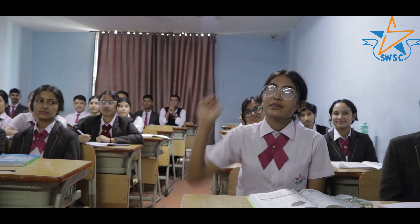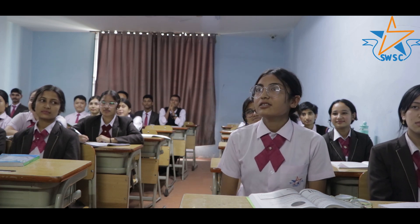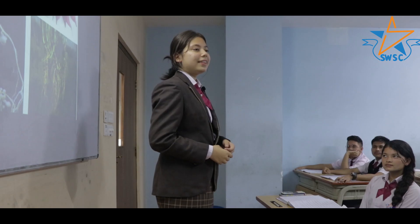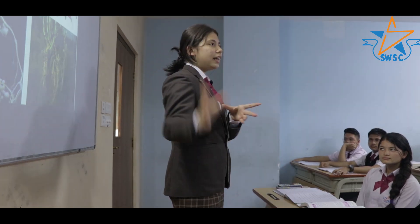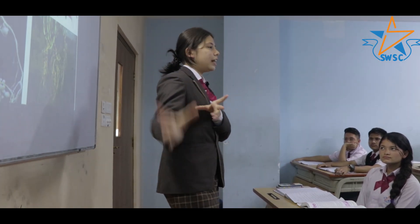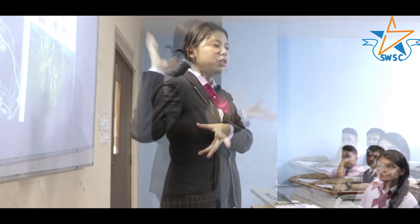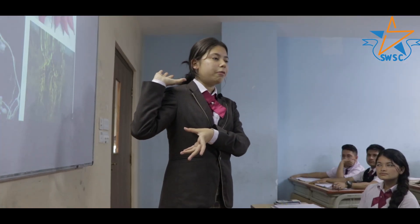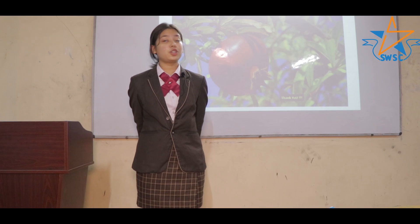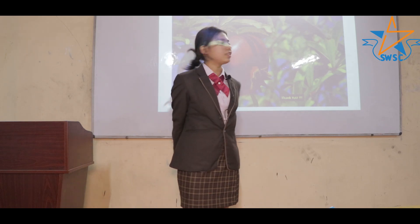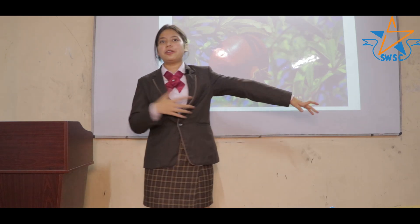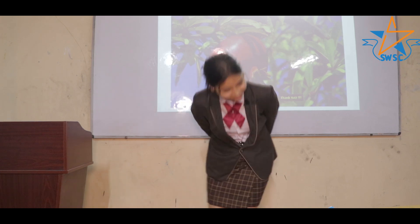By the end of this presentation, are there any queries? A question was raised: how can we identify whether a plant is monocot or dicot? Monocots have only one cotyledon, whereas dicots have two cotyledons. Another difference is that monocot plants have adventitious or fibrous root systems. Thank you for listening to my presentation and giving your valuable time. Thank you one and all.